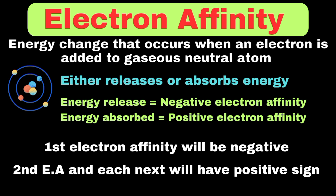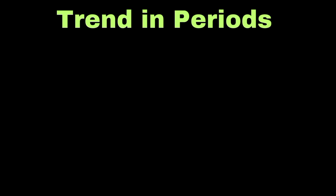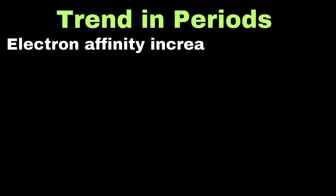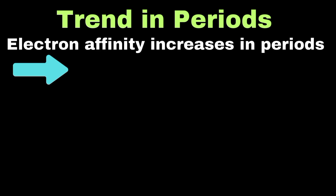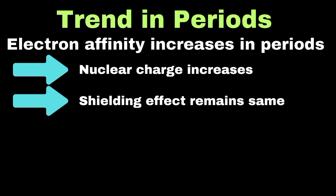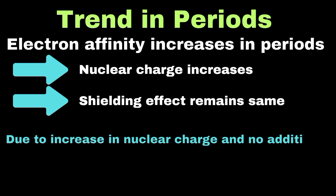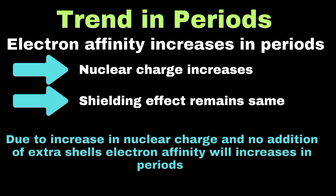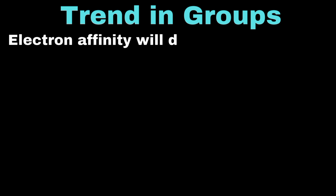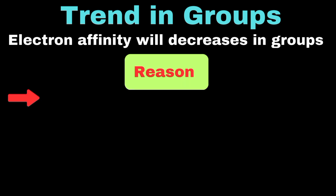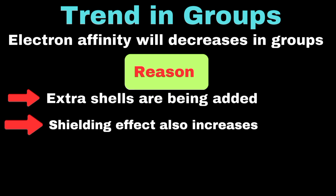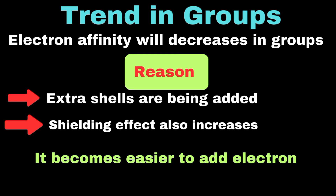Now we will discuss the trend of electron affinity in a period. When we move from left to right in a period, electron affinity goes on increasing because nuclear charge increases and the shielding effect of inner electrons remains the same. Since with successive addition of electrons it becomes more difficult to add electrons as the force of attraction increases from left to right, electron affinity increases from left to right in periods. Moving to the trend down a group, electron affinity decreases. This happens because with increase of nuclear charge, extra shells are being added and the shielding effect also increases, so it becomes easier to add an electron. Hence, electron affinity decreases from top to bottom in a group.